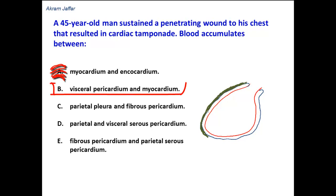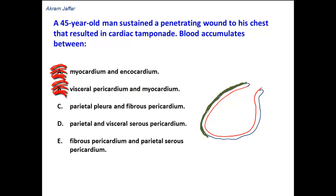Option B: visceral pericardium and myocardium? No. Blood does not accumulate between the visceral pericardium and the myocardium, because the blood accumulates in the pericardial cavity. By definition, the pericardial cavity is located between the visceral pericardium and the parietal layer of the serous pericardium.